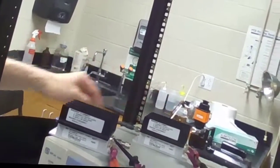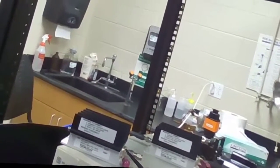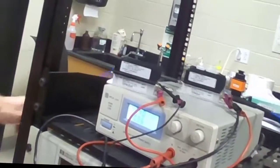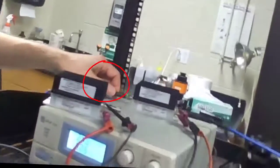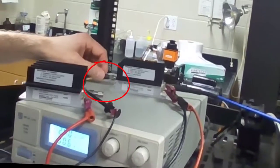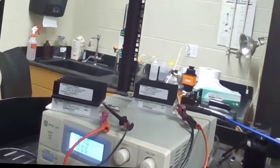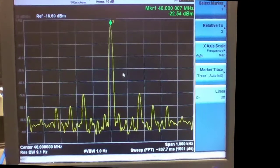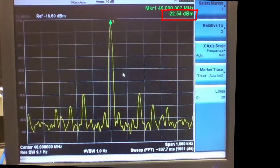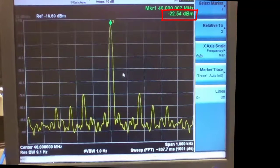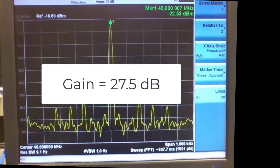First I need to check the gain of the amplifier. I do that with a signal generator so I hook up a known minus 50 dBm signal through this cable at 40 megahertz and I look at the output on a spectrum analyzer to see what the gain is. I put a marker at the peak and I get minus 22.5 dBm with minus 50 going in. That's a gain of 27.5 decibels.